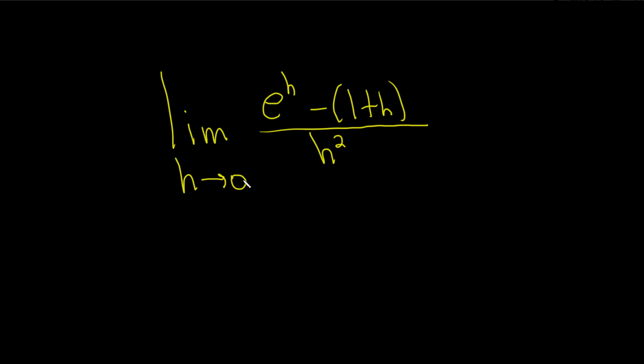If we take this number and plug it in, we get e to the 0 minus, and then here we have 1 plus 0. On the bottom we have 0 squared. e to the 0 is 1, so we get 1 minus 1 over 0. So we get 0 over 0. Whenever you have that, you can use L'Hopital's rule, so we're okay there.